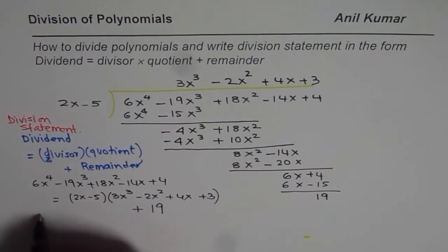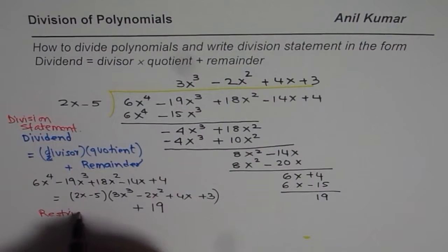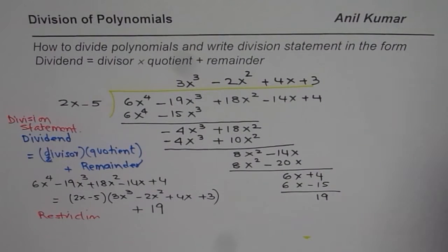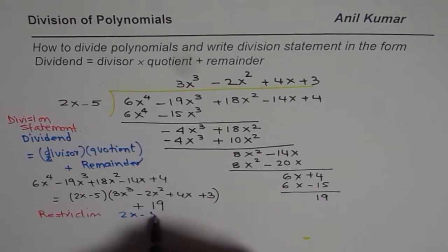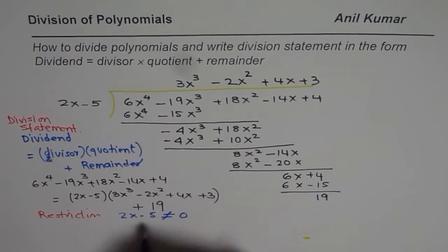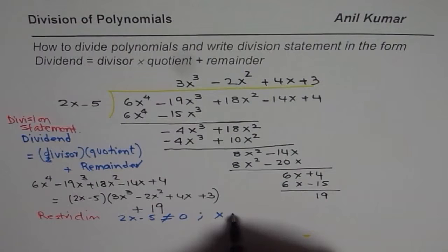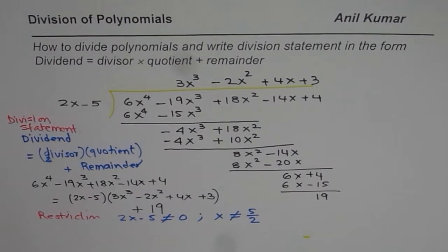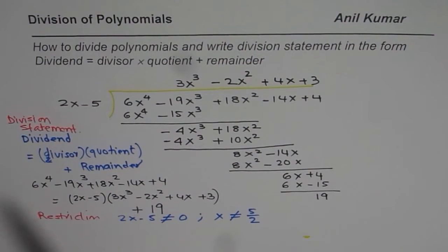We also need to write the restrictions. You cannot divide by zero, which leads to restrictions. In this case, 2x minus 5 must not equal zero, meaning x cannot equal 5 over 2. That is the restriction on this division. I hope you clearly understand how to do long division for polynomials, write the division statement, and include restrictions in your solution.